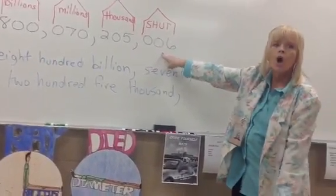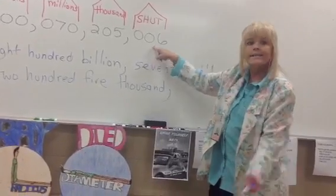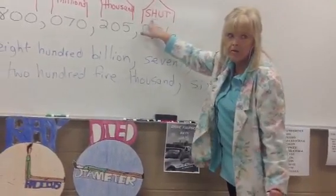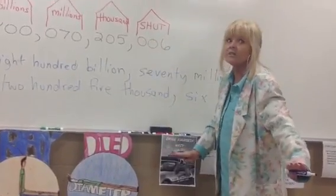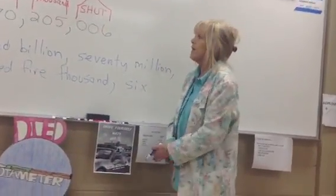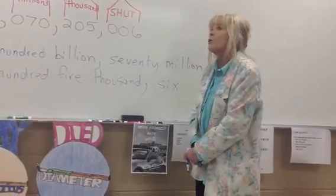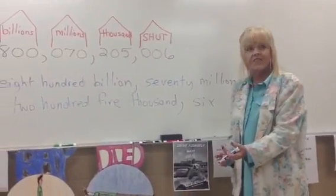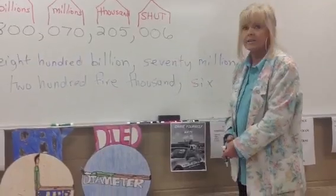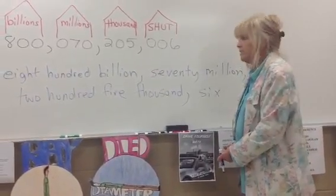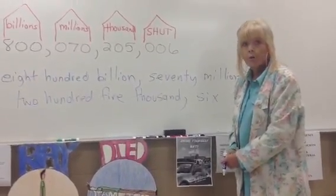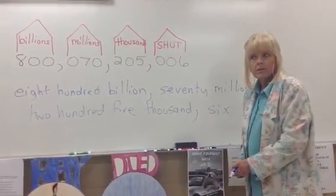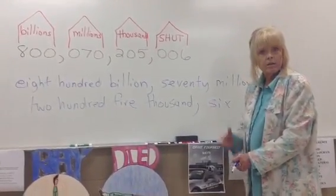Who's in that house? Six. So you just write six and then you stop — you don't say anything else. Because here's what people do wrong: they'll say eight hundred billion, seventy million, two hundred five thousand, and then they think they have to say something about the six and they'll say 'six ones' or 'six hundred.' No. When you get to the end, you just stop. Six. Done.